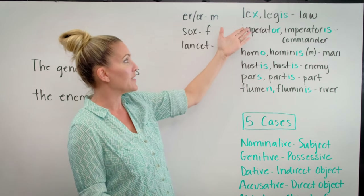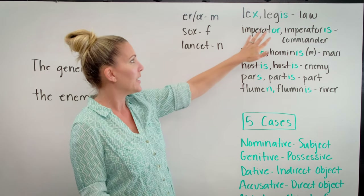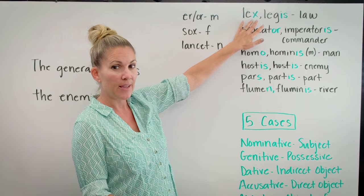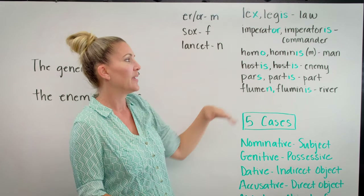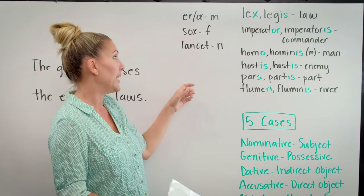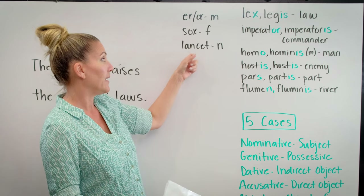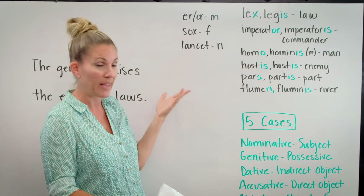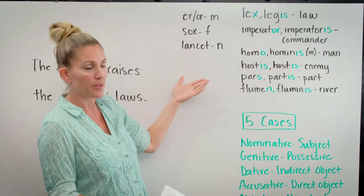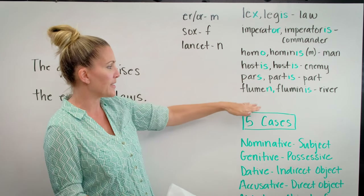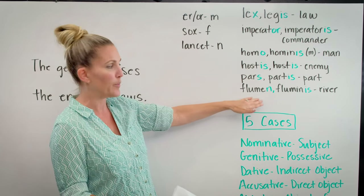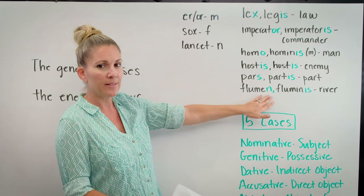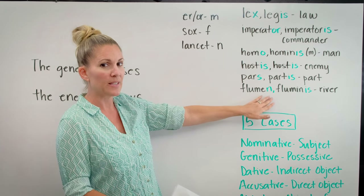For instance, the word 'lex,' which means law — the nominative singular ends in an X, so it's feminine. And if it ends in L, A, N, C, E, or T — we use the acronym LANCET — that means it's neuter. For instance, 'flumen, fluminis,' meaning river: the nominative singular ends in N, so it's neuter.